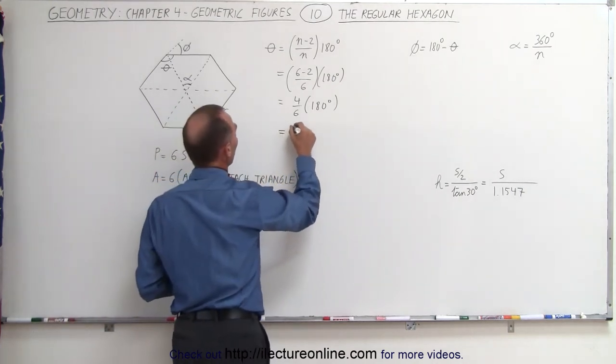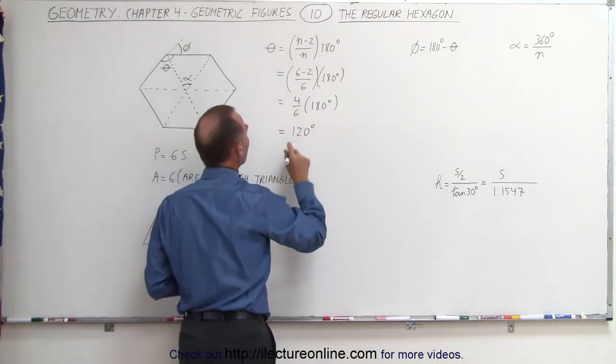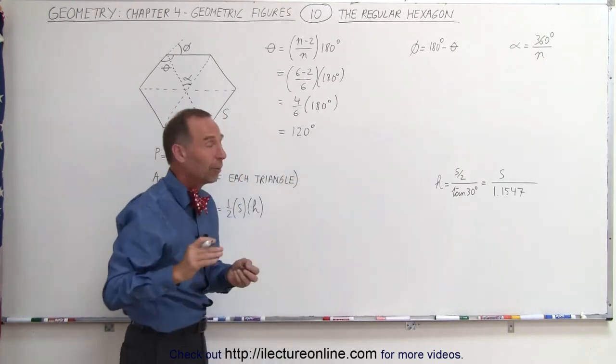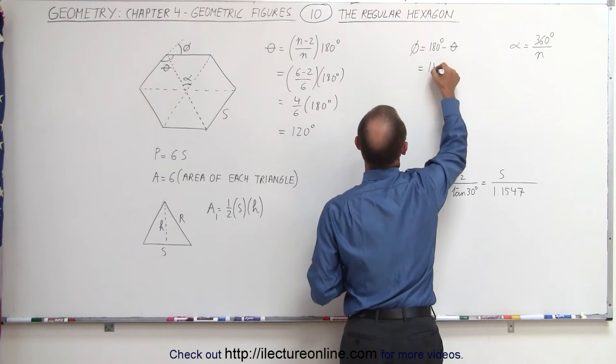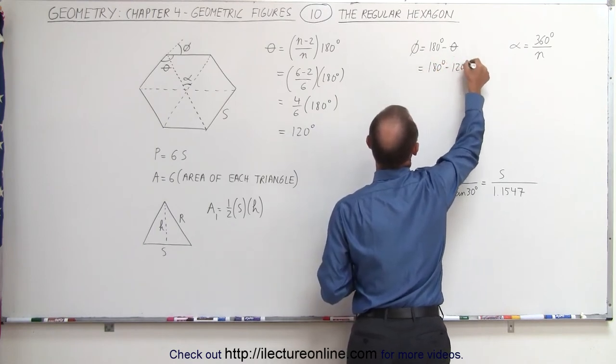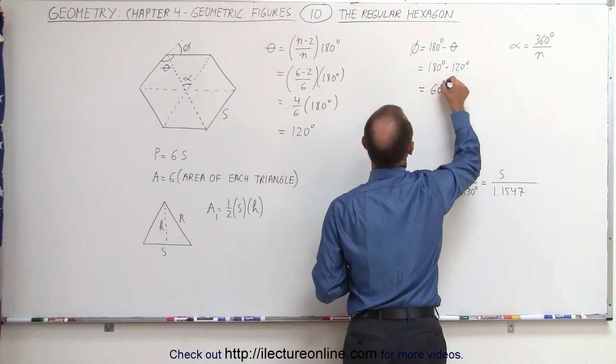Which means to find the supplementary angle phi, that is going to be equal to 180 degrees minus 120 degrees, so that's equal to 60 degrees.